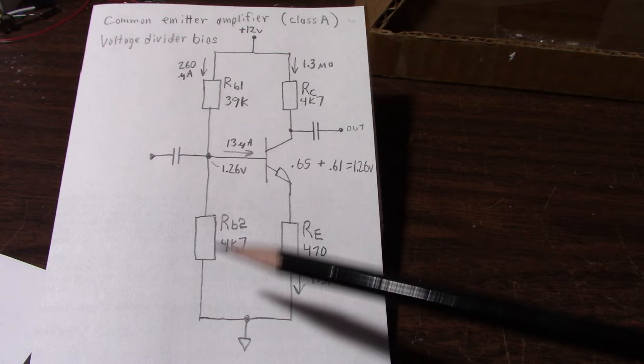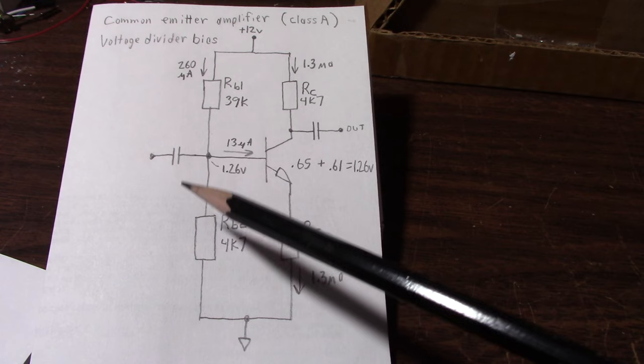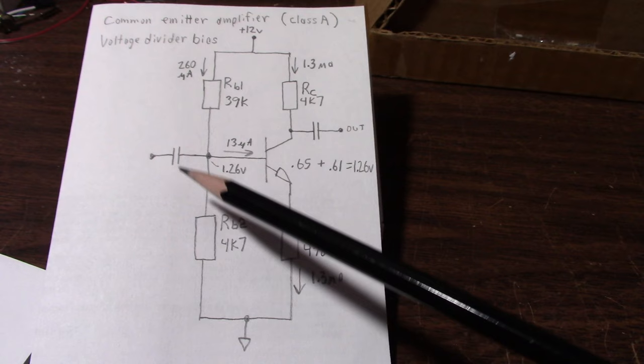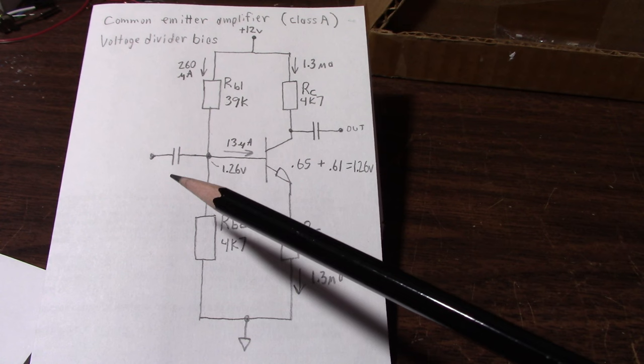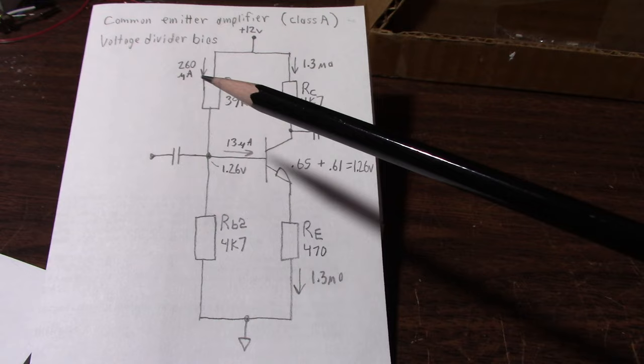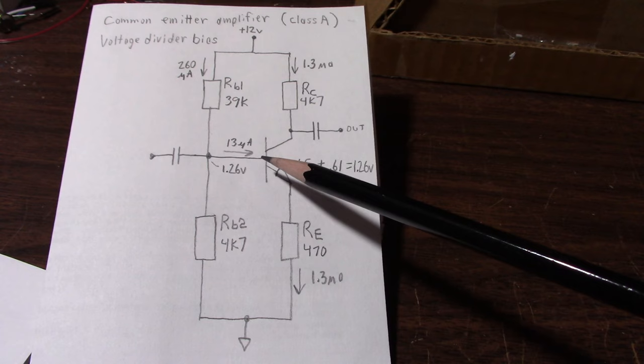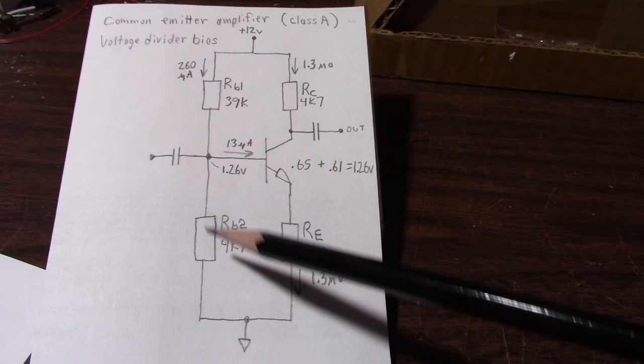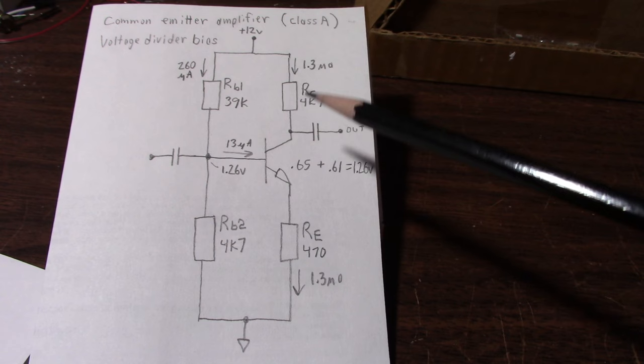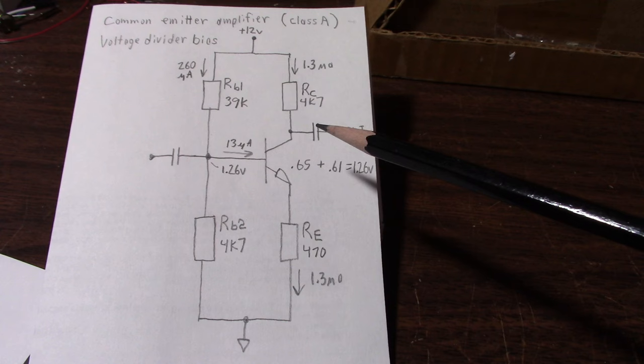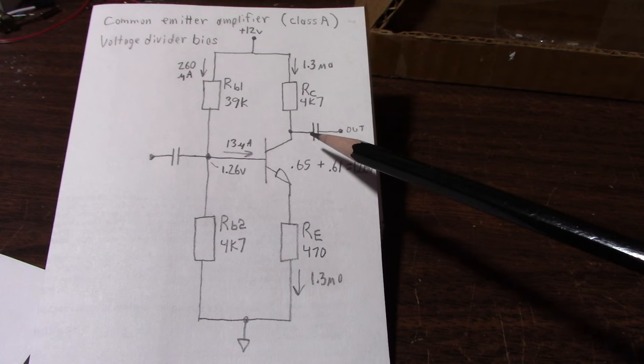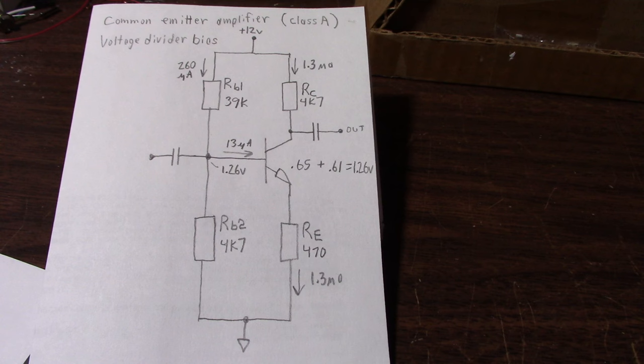You just need to know about these capacitors. And in interest to keeping the video shorter, I'm not going to get into that. It's just your high pass filter equation. Keep in mind that both of these resistors will appear in parallel to the input signal. And we can ignore the base impedance because it's going to be much higher than these. And for the output, I would base it on the output impedance of the amplifier. Okay, so now that we have this done, let's hook it up and take some measurements.